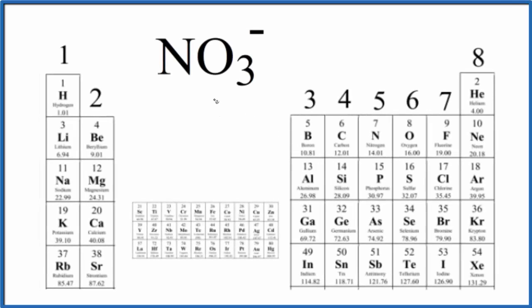In this video, we'll look at the number of valence electrons for NO3 minus. This is the nitrate ion.